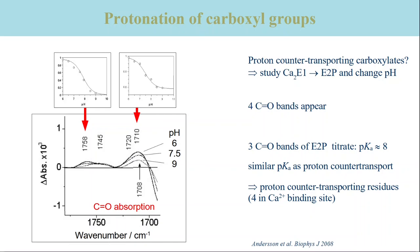When the band intensity is plotted against the pH value, as shown here for the high-wavenumber band and here for the low-wavenumber bands, the pKa of the corresponding groups can be determined. It is similar to the pKa of proton counter transport. In other words, the infrared bands disappear in the same pH range in which also proton counter transport ceases. This has established that three signals are really due to the protonation of residues involved in proton counter transport.